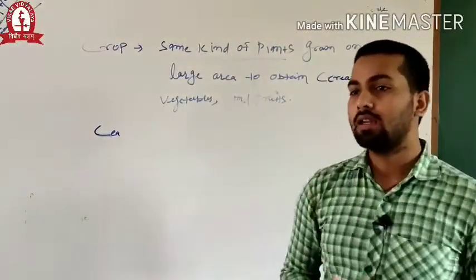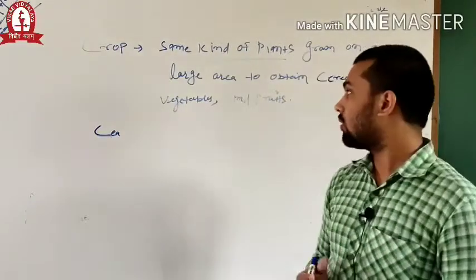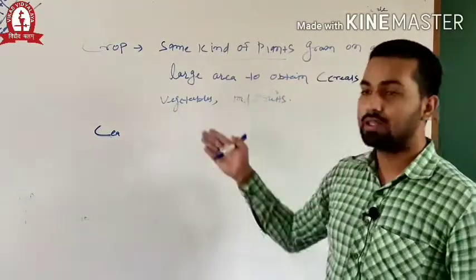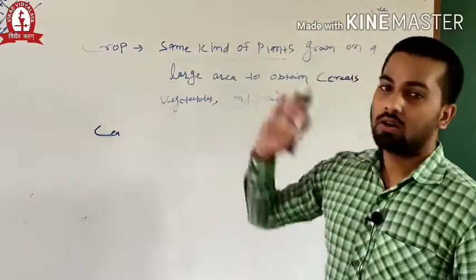What is crop? When the same kind of plant is grown over a large area to obtain cereals, vegetables, fruits is known as the crop.